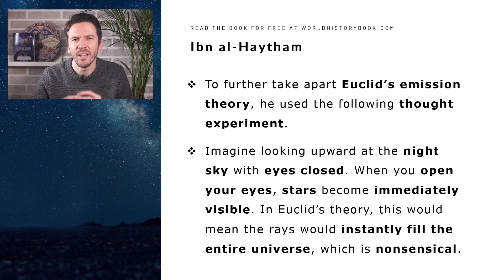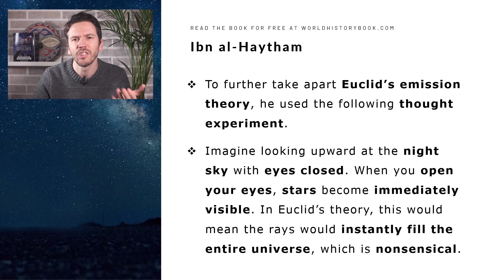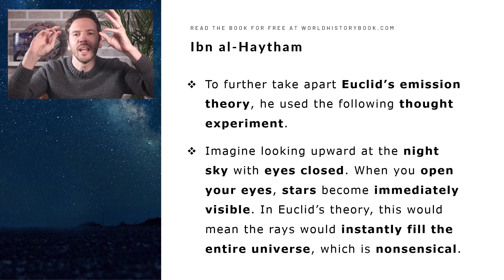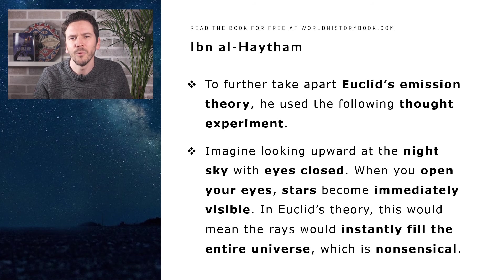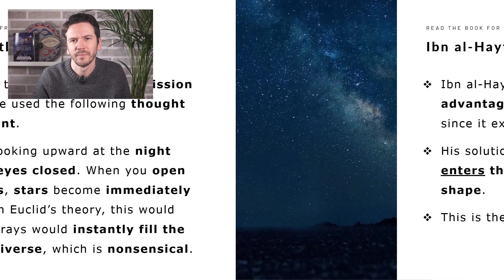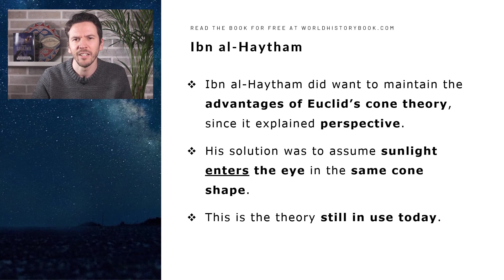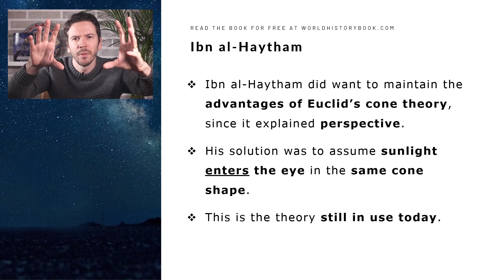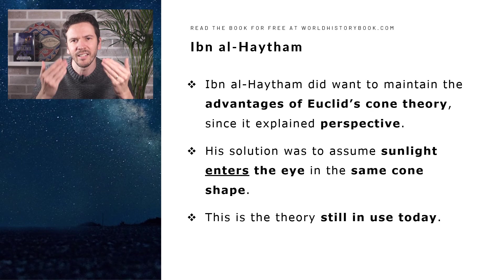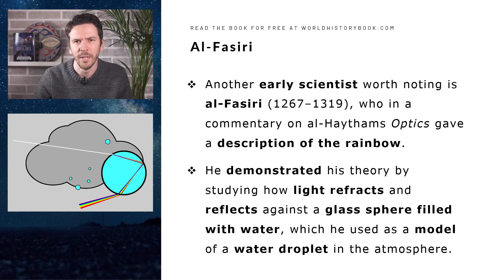To further take apart Euclid's emission theory, he used a thought experiment. Imagine looking upward at the night sky with your eyes closed. When you open your eyes, stars become immediately visible. In Euclid's theory, this would mean that rays emitting from the eye would instantly fill the entire universe, which is of course nonsensical. But Ibn al-Haytham did want to maintain the advantages of Euclid's cone theory, since it explained perspective so well. His solution was to assume that those vision rays are not emitted from the eyes in a cone shape, but that light enters the eyes in the same cone shape. And this theory is still in use today.